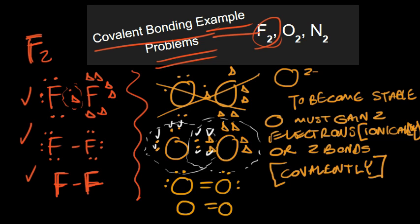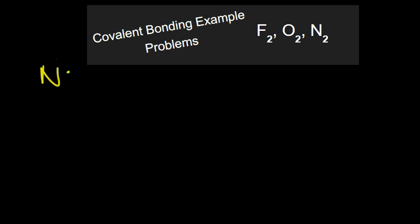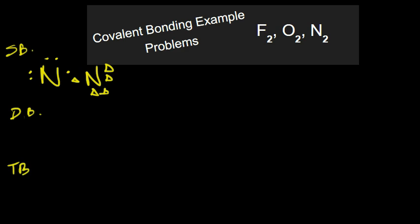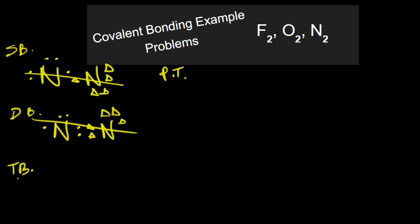Let's take a look at what N₂ would look like. With a single bond, nitrogen has five valence electrons on each side — this simply isn't going to work because nitrogen won't have eight valence electrons around it. So there are two strategies: trial and error or using the periodic table. You could try single bonds, then double bonds, and then triple bonds if needed. Let's try the double bond version: with five valence electrons on each side, the double bond still doesn't give nitrogen a full octet, so it's not going to work either.